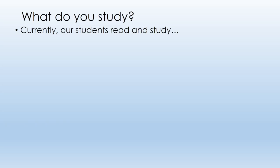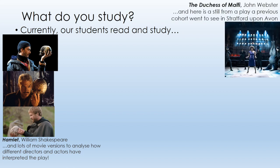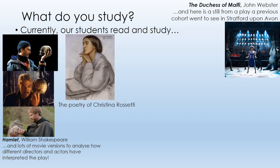Currently, these are the texts that we cover over the course. On English Literature Exam Paper One, we have some of our older texts: Hamlet, The Duchess of Malfi, and the poetry collection of Christina Rossetti. I'm including here three images from different productions of Hamlet to demonstrate that we do a lot of watching of adaptations in order to understand the critical interpretations and various readings of Hamlet and the messages in the play. Also on the slide, you can see an image taken from The Duchess of Malfi from a recent production that we went to see at Stratford-upon-Avon.